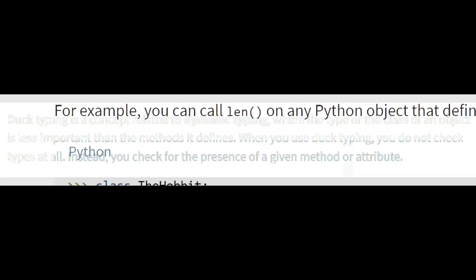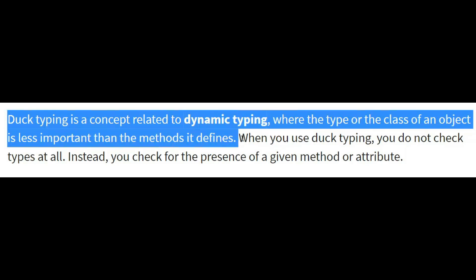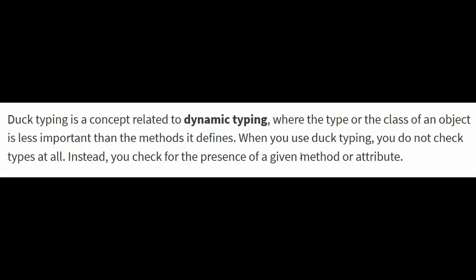Let's take a look at the technical definition of duck typing. Duck typing is a concept related to dynamic typing where the type or the class of an object is less important than the method it defines. When you use duck typing, you do not check type at all — instead you check for the presence of a given method or attribute.